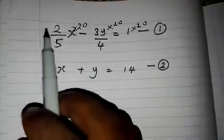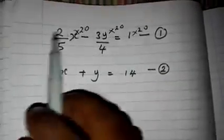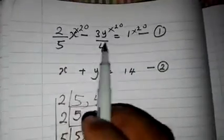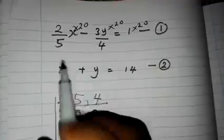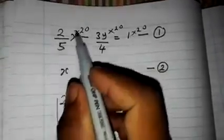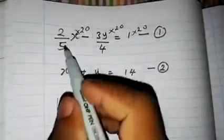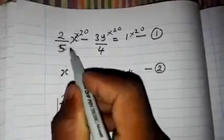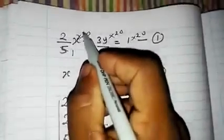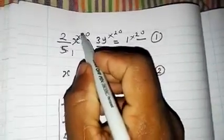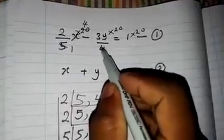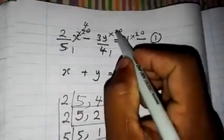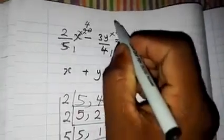Multiply all the terms by 20. What will happen here? You can cancel down: how many 5s are there in 20? That's 4. And here how many 4s are there in 20? That's 5. So 2 into 4 is 8 — giving 8x.